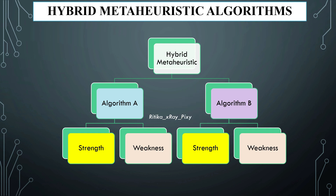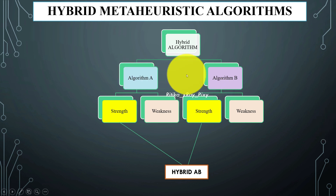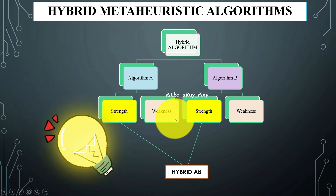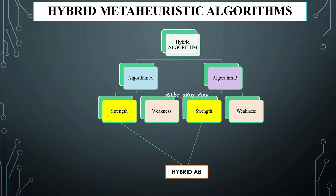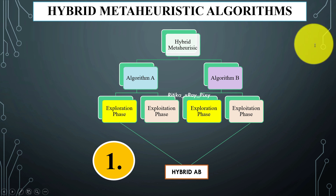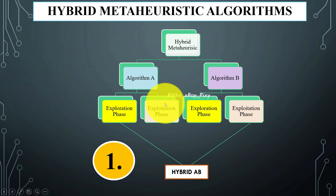Each algorithm has its own strength and weakness. To create a powerful metaheuristic algorithm, we combine their strengths so that a new algorithm is formed. In metaheuristic algorithms, each algorithm has an exploration phase and an exploitation phase. Suppose we have two metaheuristic algorithms, Algorithm A and Algorithm B — each has its own exploration and exploitation phase.